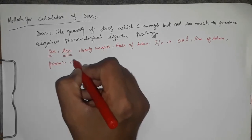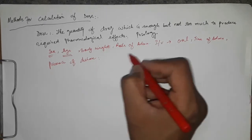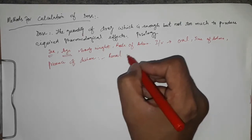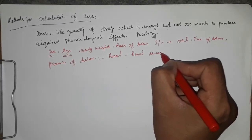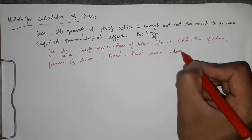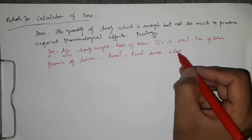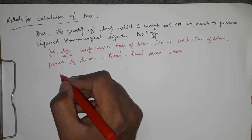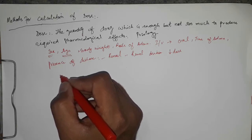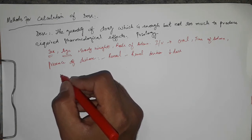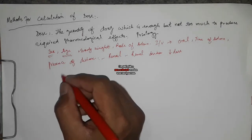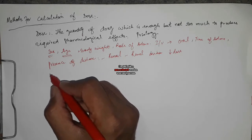In the presence of disease, dose adjustments are needed. For example, if a drug is eliminated by the renal route and a patient has renal disease, the dose will be reduced because giving a standard dose may cause toxicity. Similarly, if a drug is eliminated through the hepatic route and a patient has hepatic disease, the dose will be reduced accordingly.